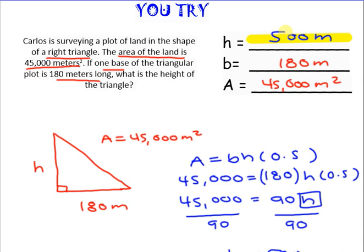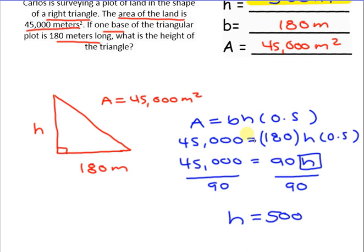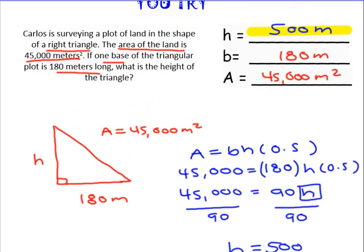Go ahead and hit pause if you're not done. I drew a right triangle because the problem said it was a right triangle. The area was 45,000 meters squared and one of the bases was 180 meters, and it asked me to find the height. Starting with the formula and plugging in the numbers, I got 500. So the height of this triangle is 500 meters.